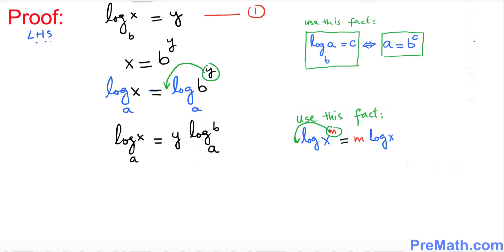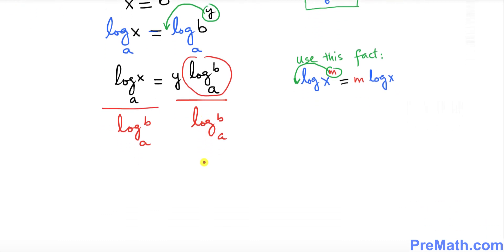Now I want to isolate y. If you want to isolate y, I can divide both sides by this quantity. I'm gonna divide by this quantity, so I'm going to put down log of b with the base a, and I'm gonna divide on this side as well: log of b with a base a.